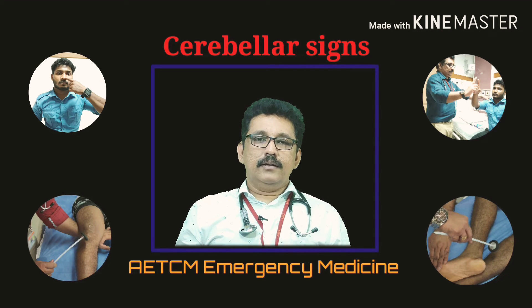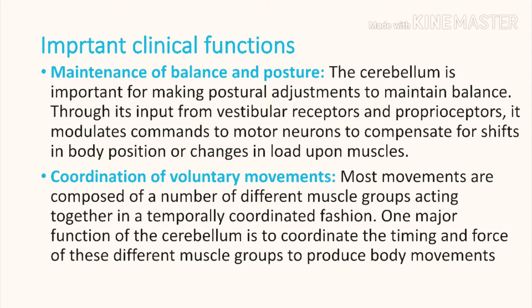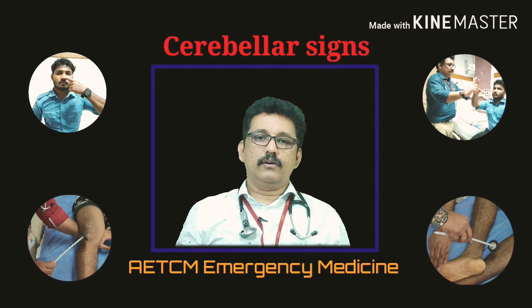The cerebellum is one important part of the brain. Its major functions are maintenance of balance and posture, and it is important for making postural adjustments. The second important function is coordination of voluntary movements. Most movements are initiated from the motor cortex and the electrical signal is sent to the spinal cord, then to the muscles — all coordinated by the cerebellum.